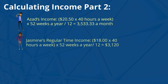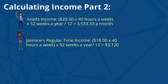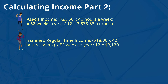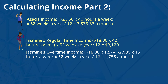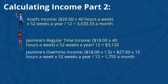Let's look at Jasmine's regular time income. $18 an hour times 40 hours a week times 52 weeks a year divided by 12 equals $3,120. Now let's take a look at Jasmine's overtime income. $18 times 1.5 for time and a half is equal to $27, times 15 hours a week times 52 weeks a year divided by 12 is equal to $1,755 a month.